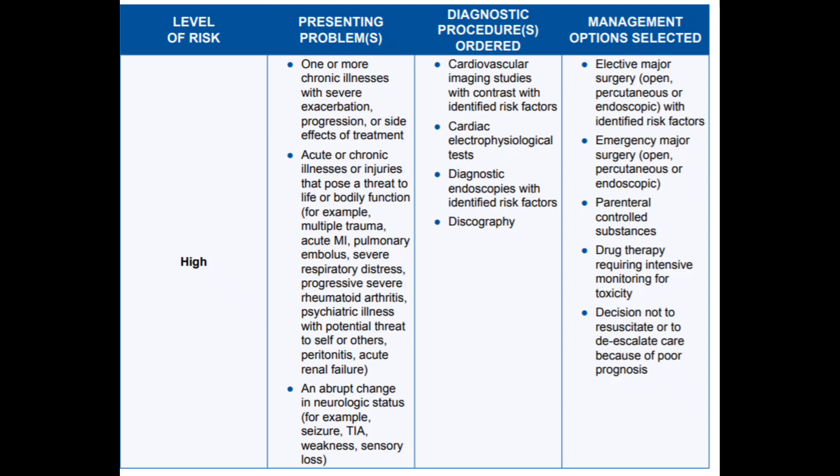High risk includes one or more chronic illnesses with severe exacerbation, acute or chronic illnesses or injury that pose a threat to life, or abrupt change in neurologic status. Diagnostic procedures include cardiovascular imaging studies with contrast with identified risk factors, cardiac electrophysiologic tests, endoscopies with identified risk factors, and discography. Management options include elective major surgery, emergency major surgery, parenteral controlled drug therapy requiring intensive monitoring for toxicity, and decision to resuscitate or de-escalate care due to poor prognosis. Those are the three components of E&M: history, physical examination, and Medical Decision Making.